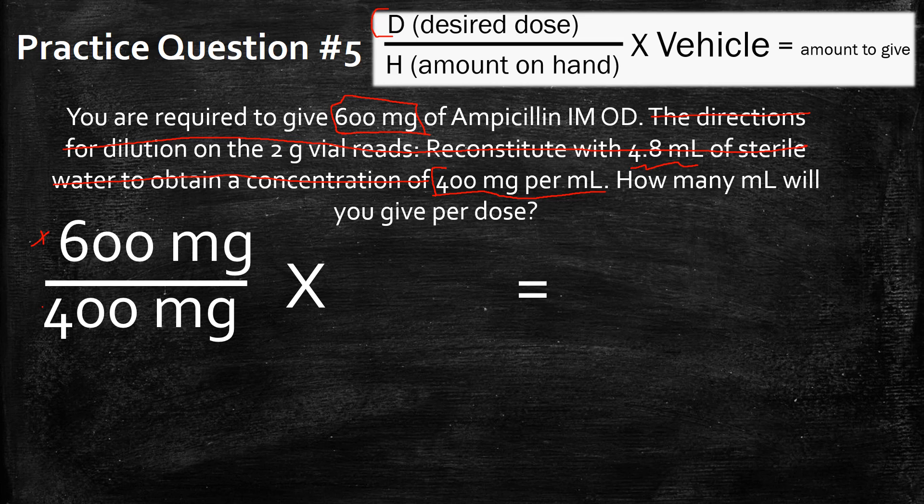You're going to put the 400 milligrams at the bottom because that's your amount on hand and your vehicle in this case can be simplified to one milliliter because that's what the label on the vial says. So the vehicle is one milliliter.